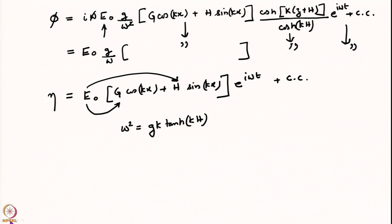Having verified that we recover the correct results in the unforced case, let us now understand this Mathieu equation. We had derived the Mathieu equation earlier for the Kapitza pendulum, and now we have obtained the same Mathieu equation for linearized surface waves on a pool of liquid of undisturbed depth h, being vibrated up and down with frequency capital Omega and amplitude small a. The stability chart of the Mathieu equation has tongue-like structures, and inside those tongues one obtains unstable response.